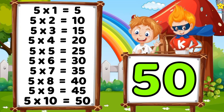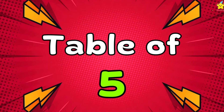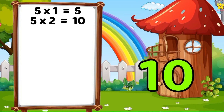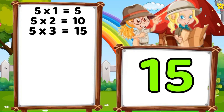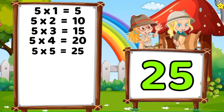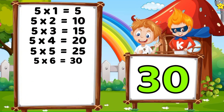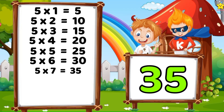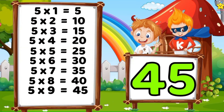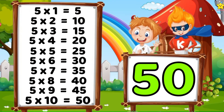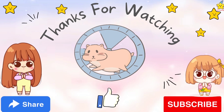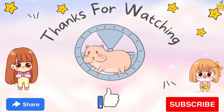Table of five: 5 times 1's are 5, 5 times 2's are 10, 5 times 3's are 15, 5 times 4's are 20, 5 times 5's are 25, 5 times 6's are 30, 5 times 7's are 35, 5 times 8's are 40, 5 times 9's are 45, 5 times 10's are 50. Okay! Thank you for watching, take care, bye-bye! And subscribe to the channel.